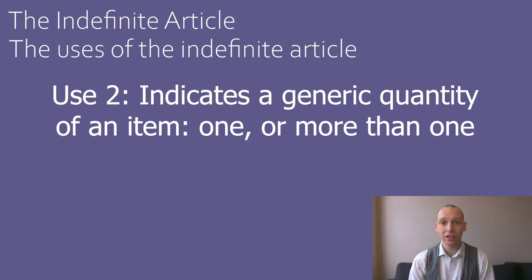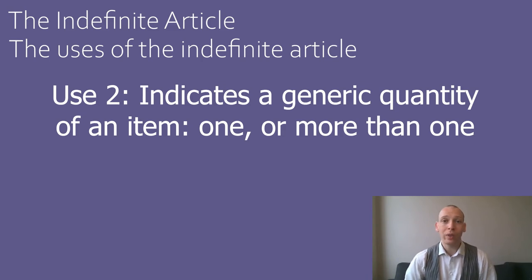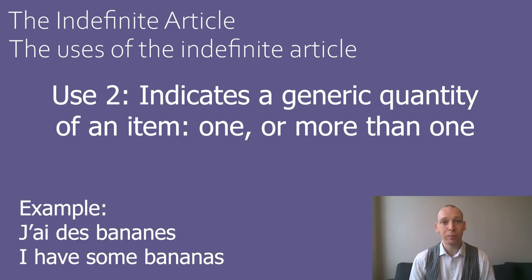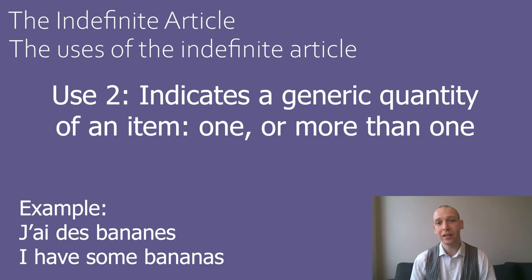The second use of the indefinite article is to specify a generic quantity of an item, either one or more than one, without specifying a precise amount. For example, 'j'ai des bananes' — 'I have some bananas'. The indefinite article 'des' in this sentence specifies that there is more than one banana, but doesn't specify how many.